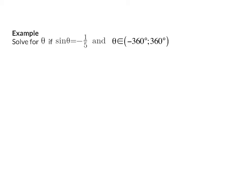Looking at today's example, we need to solve theta if sin theta is equal to minus a fifth, and very specifically only for the interval minus 360 to 360 degrees. So we need to get the specific answers that are between minus 360 and 360 degrees.